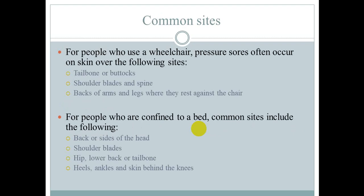Common sites of pressure sores include the inner areas with continuous rubbing — the buttocks, shoulder blades, and spine. The shoulder blades are very prominent on the body. Other common sites include the back and sides of the head, hip, lower back or tailbone, heels, ankles, and skin behind the knees.